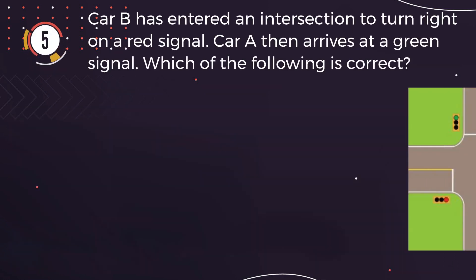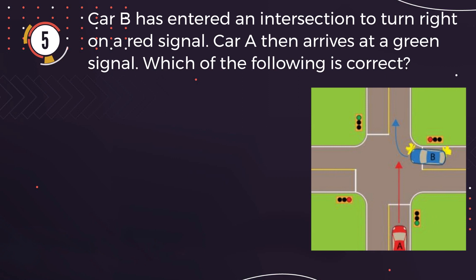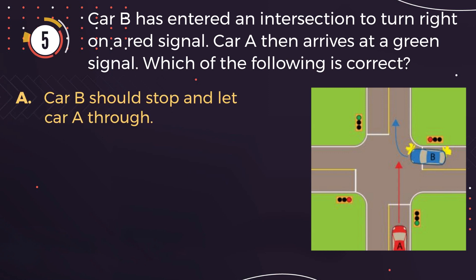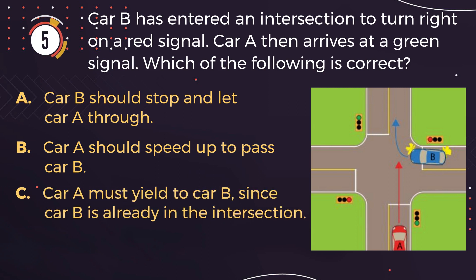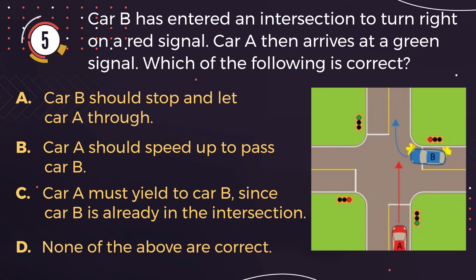Number 5. Car B has entered an intersection to turn right on a red signal. Car A then arrives at a green signal. Which of the following is correct? A: Car B should stop and let car A through. B: Car A should speed up to pass car B. C: Car A must yield to car B, since car B is already in the intersection. D: None of the above are correct.